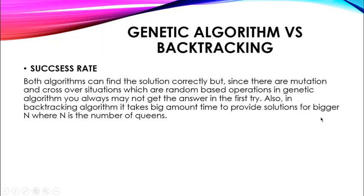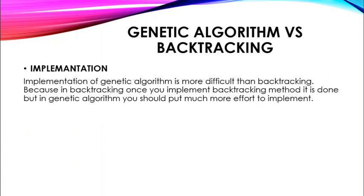Success rate: both algorithms can find the solution correctly. But since mutation and crossover are random-based operations in genetic algorithm, you may not always get the answer on the first try. In backtracking, it takes a large amount of time to provide solutions for bigger N. Implementation: genetic algorithm is more difficult to implement than backtracking. In backtracking, once you implement the method, it is done. But in genetic algorithm, you need to put much more effort.